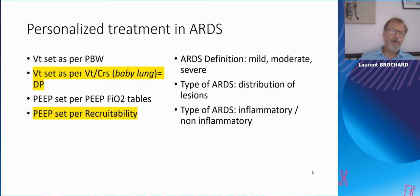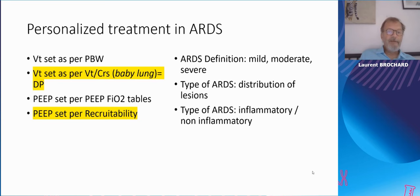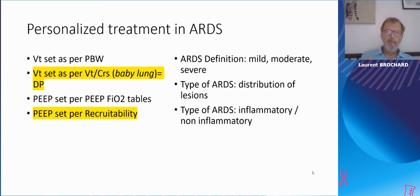What we do today is set a volume based on predicted body weight, which is a way to approximate normal lung size. But we could do better by using driving pressure, which could be a way to set PEEP based on the ratio of tidal volume to compliance — much better expressed to the baby lung.